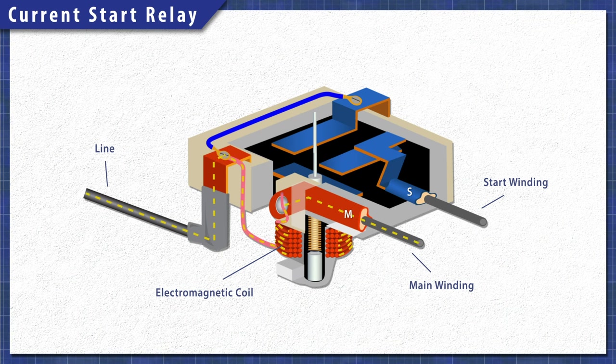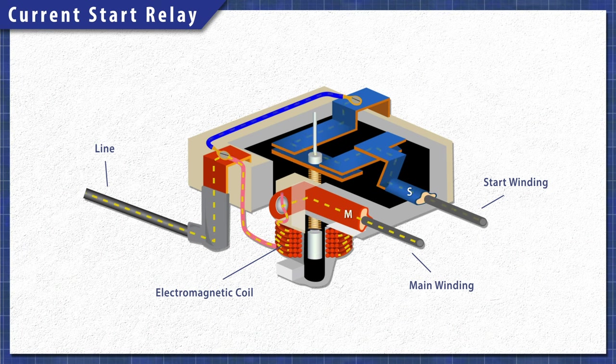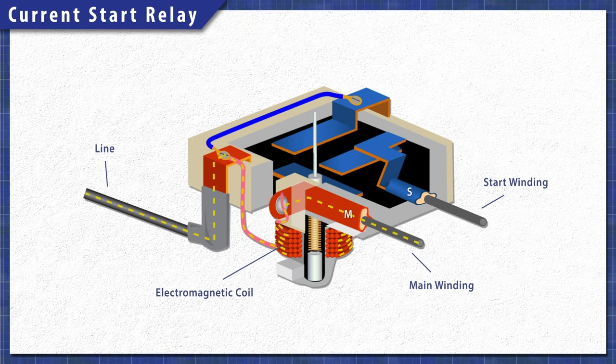A current start relay works differently. When current flows through the coil, the magnetic field pulls a plunger and closes the circuit. The current drops shortly after startup, which releases the plunger and disconnects the start winding.